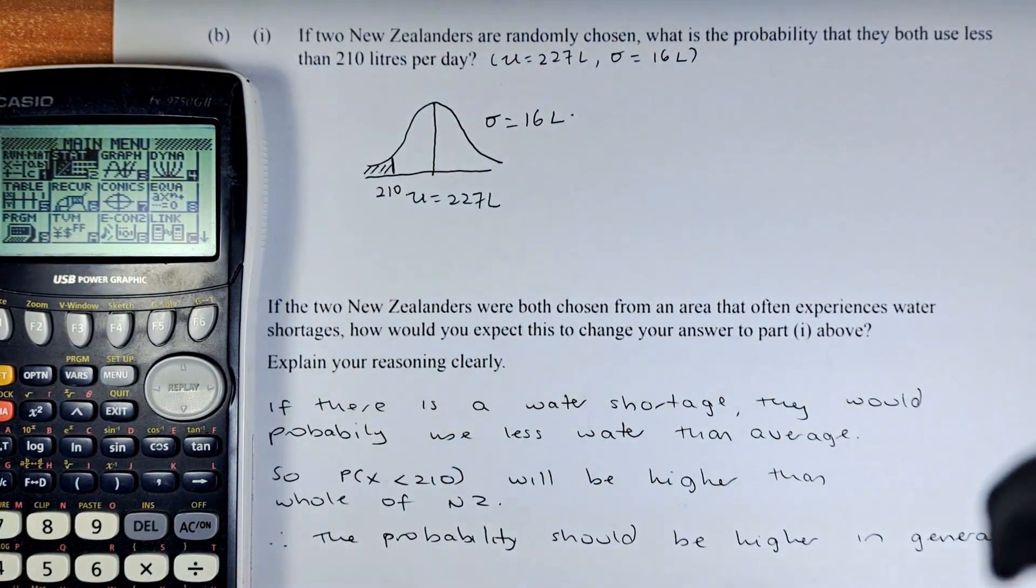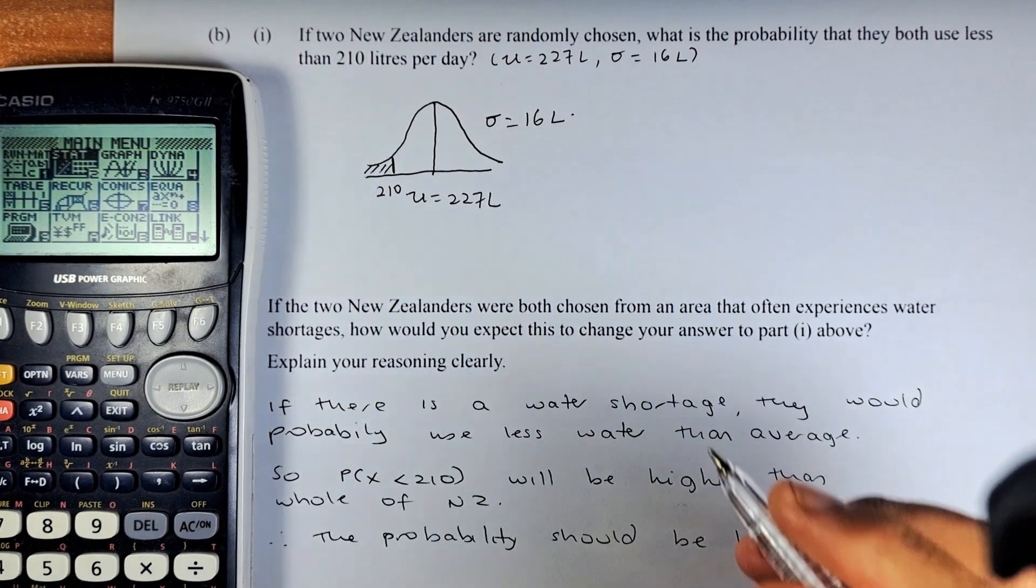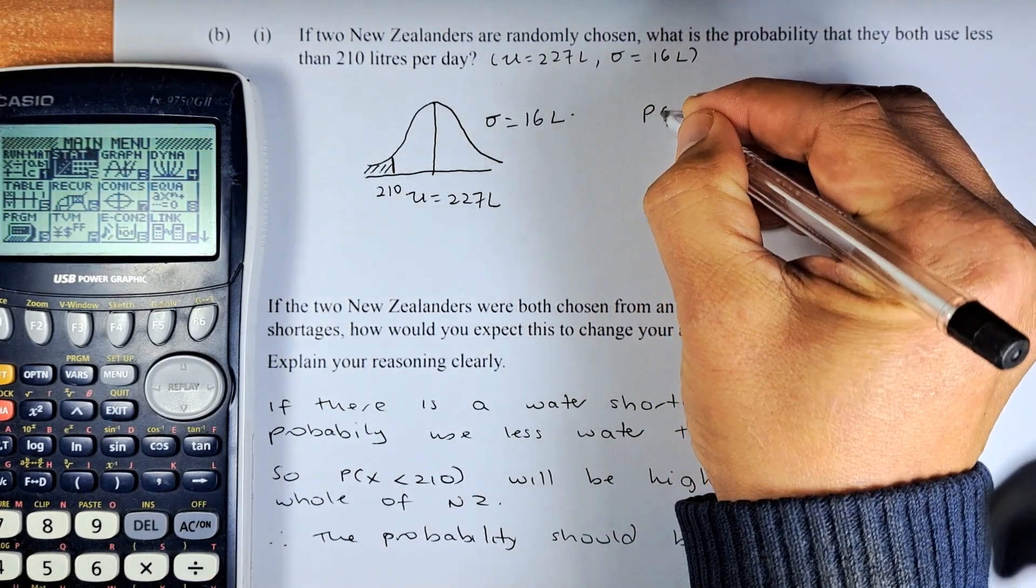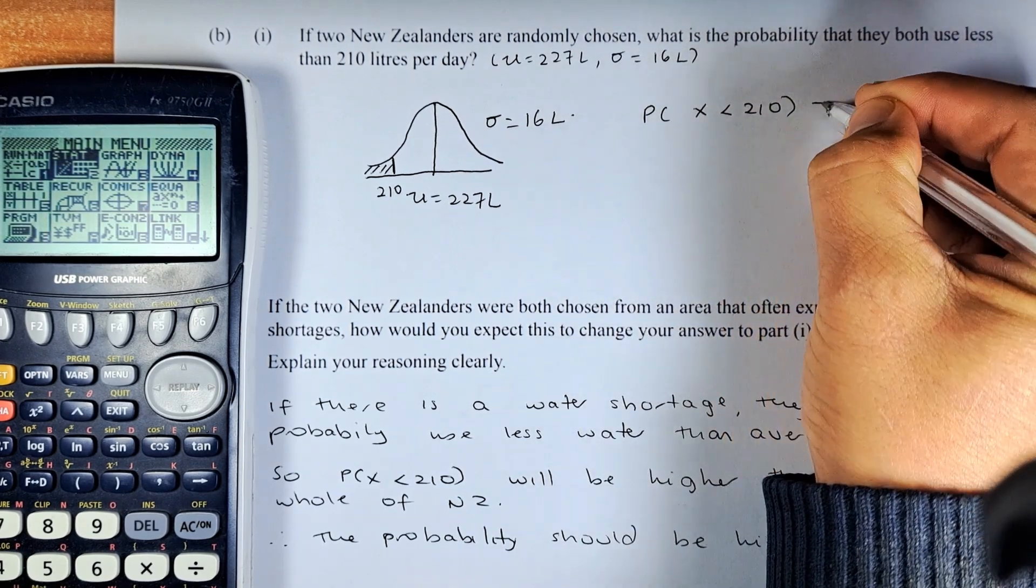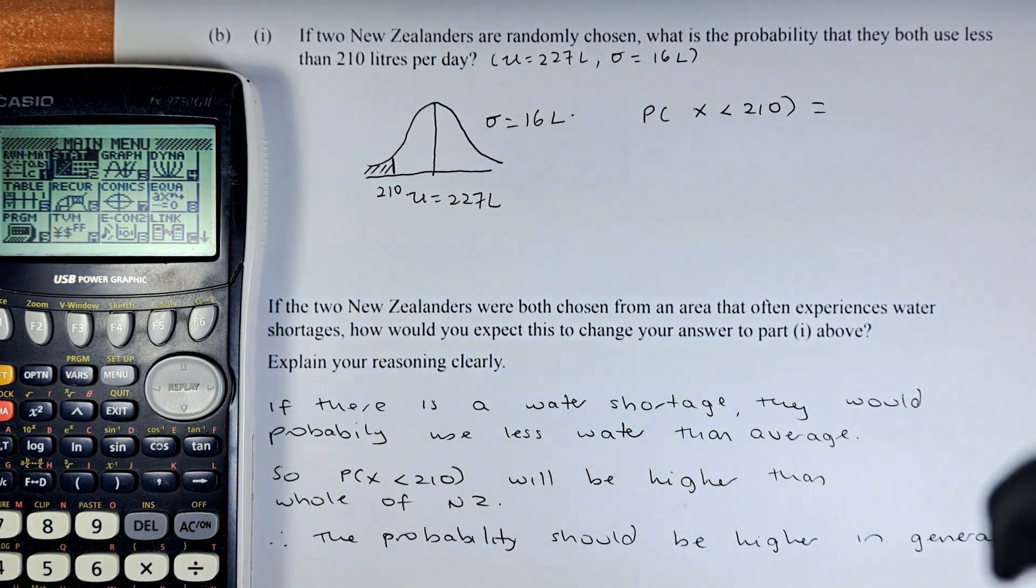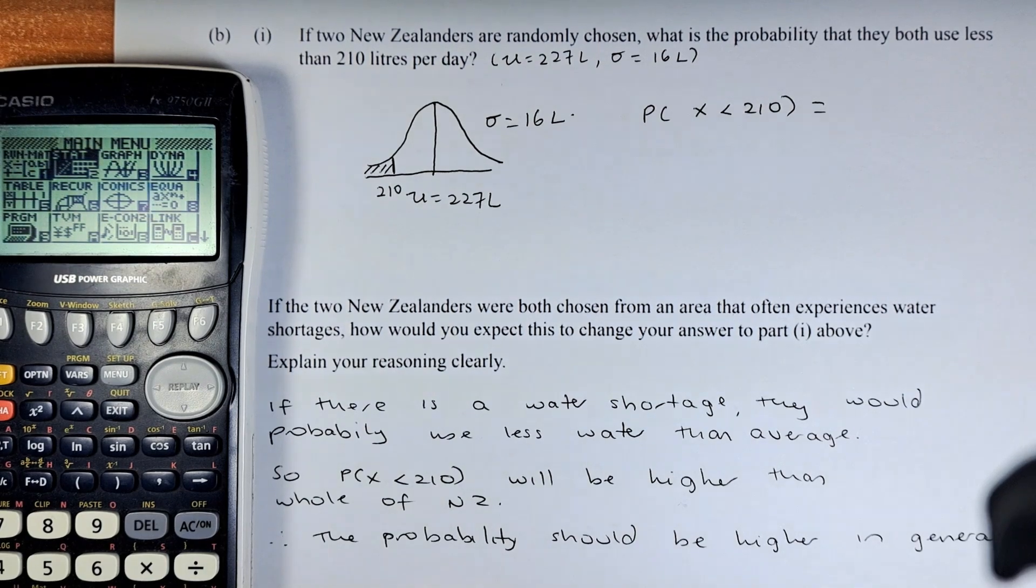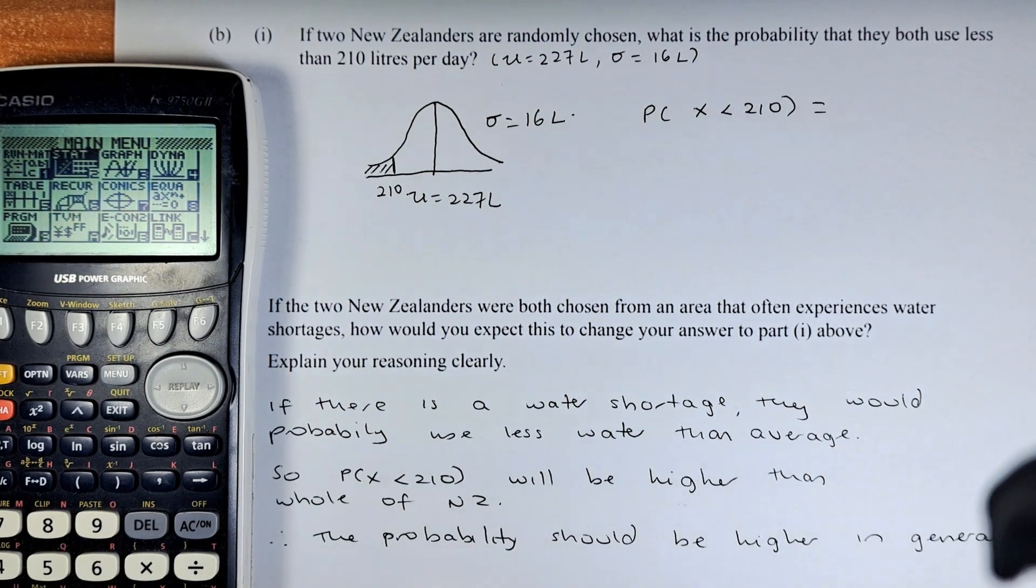So to calculate that area, we are going to use the graphic calculator to help us. So probability of X less than 210, we are going to use the graphic calculator to solve this. The other method you can use is using the normal distribution table.